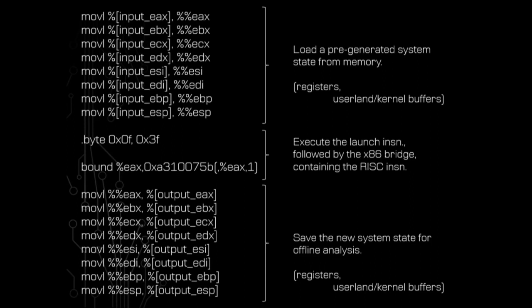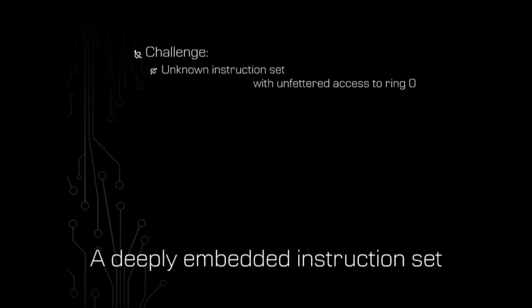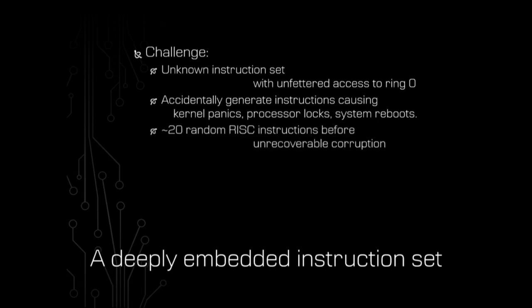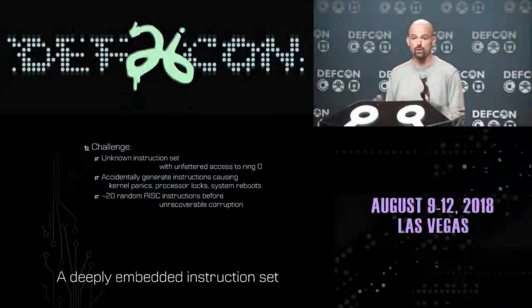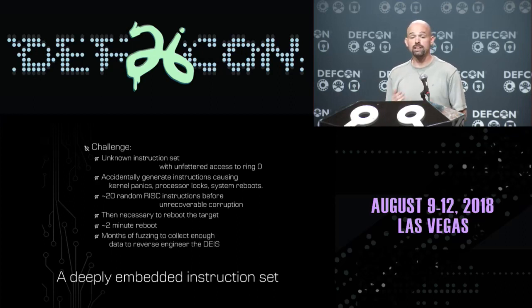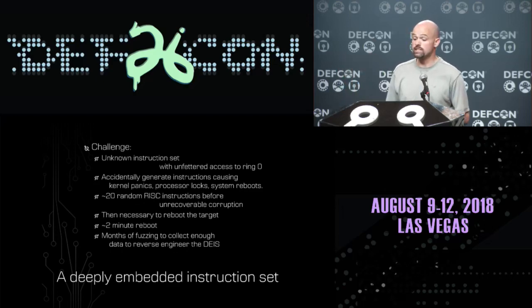Unfortunately we run into more challenges. I'm dealing with a totally unknown instruction set that probably has unfettered access to ring zero, so it's really easy to accidentally generate instructions that cause kernel panics, processor locks, or complete system reboots. In practice I could only generate about 20 RISC instructions before the system became unrecoverably corrupted and I had to reboot. Even after optimization, it took about two minutes for one of these systems to boot. Rough approximations indicated it was going to take months and months of fuzzing to gather enough data to reverse engineer this instruction set.